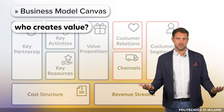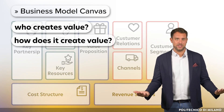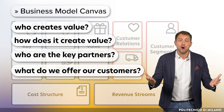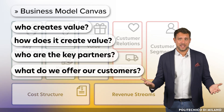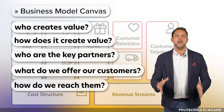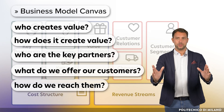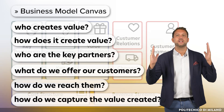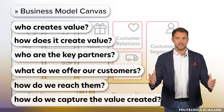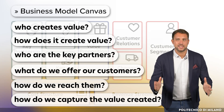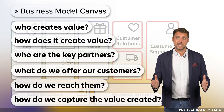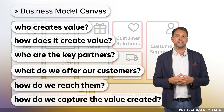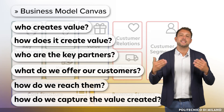Who creates value? How does it create value? Who are the key partners? What do we offer our customers? How do we reach them? And most importantly, how do we capture the value created? These are just some of the questions we ask ourselves as we fill out the business model canvas in its 9 blocks.